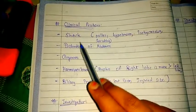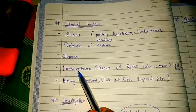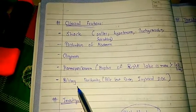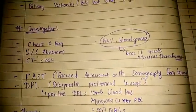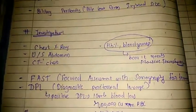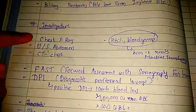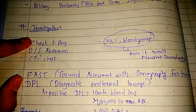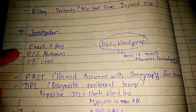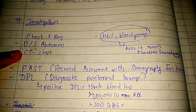Clinical features include shock, distension of abdomen, oliguria, hemoperitoneum, and biliary peritoneum. For investigations, we first go for chest X-ray, ultrasound of abdomen, and CT scan of chest — these are common investigations in all types of injuries.